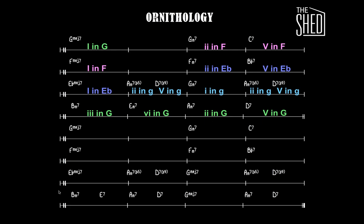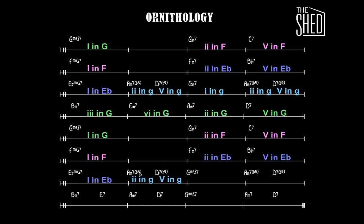This is an A-B tune, and the B is a little bit different from the A, but not that much. The first 6 measures are the exact same. Then instead of the minor 2-5 going to a minor chord like it did in the A section, it's going to go to a major chord. So we go back to our original key center of G major, and we have another minor 2-5 in G.